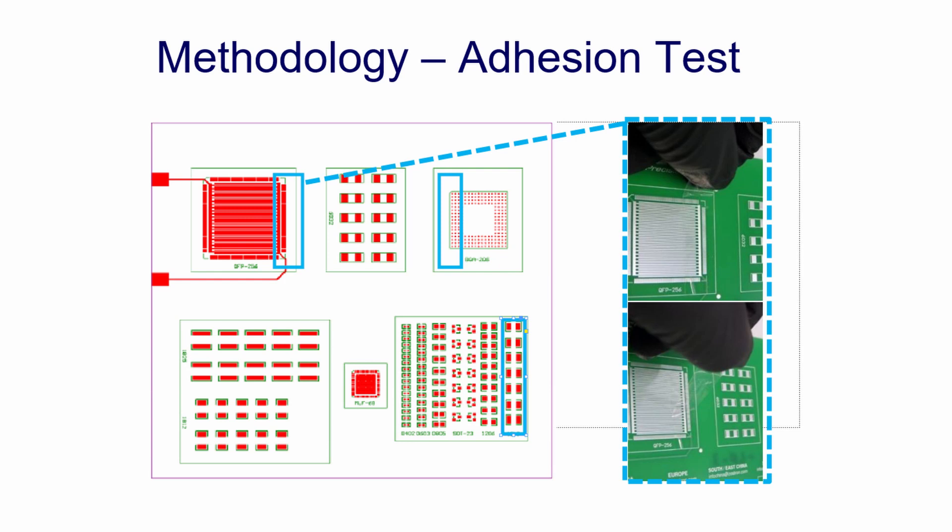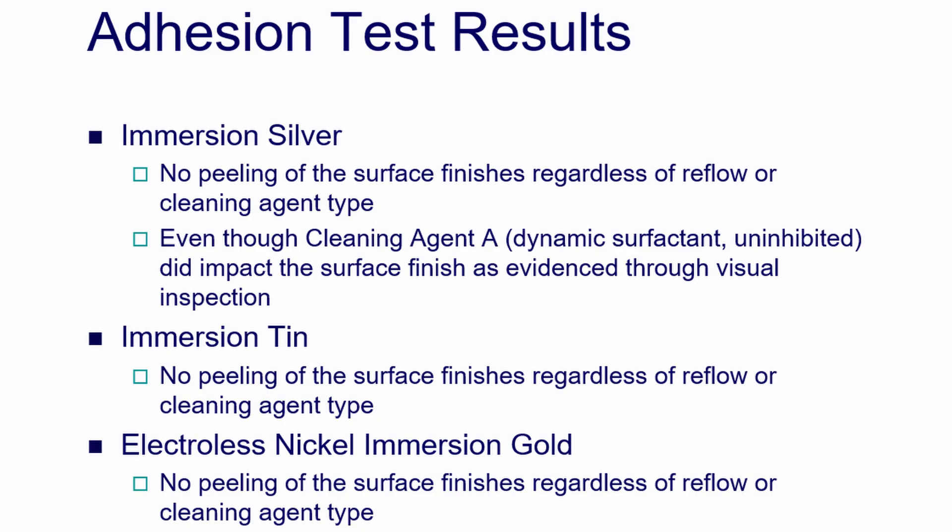The next analytical test that was conducted was the adhesion test. This test made use of a 3M 600 tape that was applied on various areas of the board and forcibly removed. The tape was then inspected under a microscope to check for any particles of the plating that were removed during the removal process. It was found that all the cleaning agents and all the surface platings were completely fine, and there was no plating removal upon the application of this adhesion test.